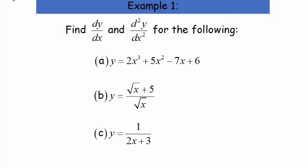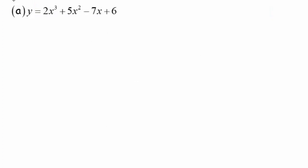So we have questions a, b, and c. Let's start with question a first. Our function is y equals 2x cubed plus 5x squared minus 7x plus 6. Now I am going to find dy/dx. So the first order of differentiation: dy/dx is equal to 6x squared plus 10x minus 7. Differentiating the constant 6, of course we get 0.